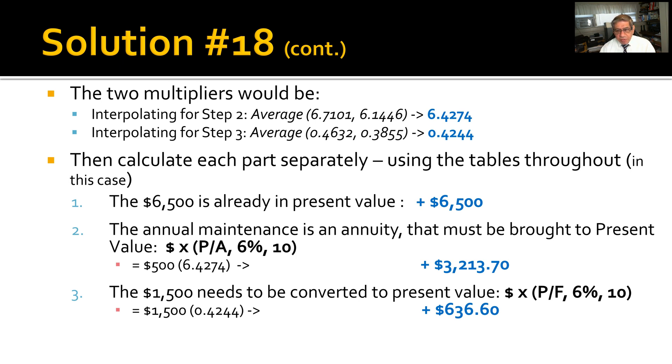Calculate each part separately using the tables, including the interpolated values. Step one: The $6,500 is already in present value, so just take it. Step two: The annual maintenance is an annuity that must be brought to present value—$500 × 6.4274, which is interpolated, equals $3,213.70. Step three: Take the $1,500 future value, bring it to present—$1,500 × the interpolated value from the table comes out to $636.60. When you add it all together, the total present value of this deal: $10,350.30.